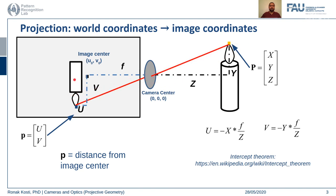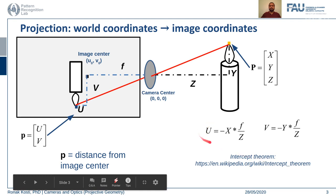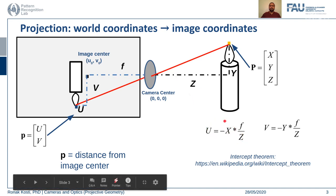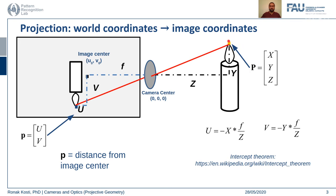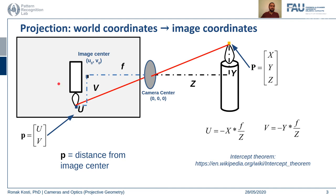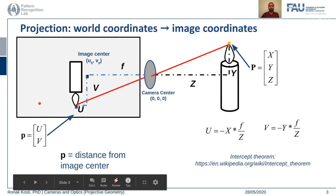The intercept theorem basically states that when you have rays of light and a camera axis, with a real world plane and an image plane, it gives you the proportion of the line segments formed between two intersecting lines. Here, x is the real world point and u is its corresponding point in the image plane; similarly y maps to v. So three-dimensional world coordinates are converted into two-dimensional image coordinates — that's what projection means.